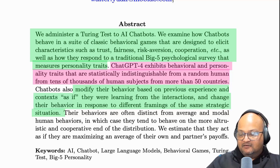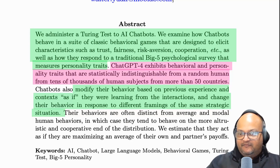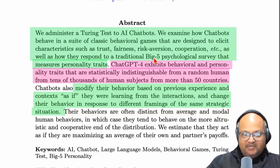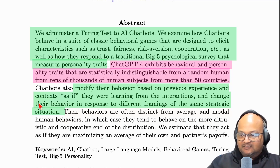Those two tests are: a personality test to see where the subject falls along the Big Five personality traits, and a second test involving various psychological games like the Prisoner's Dilemma. These games test for traits like fairness, risk aversion, and eagerness to cooperate. The authors administered these tests to LLMs and compared the results with a large set of human responses. The headline result is that GPT-4, based on its behavioral and personality traits, is statistically indistinguishable from a random human being taken from a large sample of human responses on the same tests.